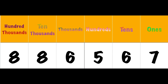The six is in the thousands place, the eight is in the ten thousands place, and the eight is in the hundred thousands place. The number is eight hundred and eighty-six thousand, five hundred and sixty-seven.